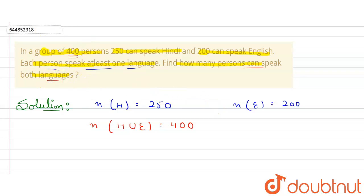Both languages means English and Hindi. What I will put in between is intersection, means we'll find the people who can speak both English as well as Hindi. We need to find this.